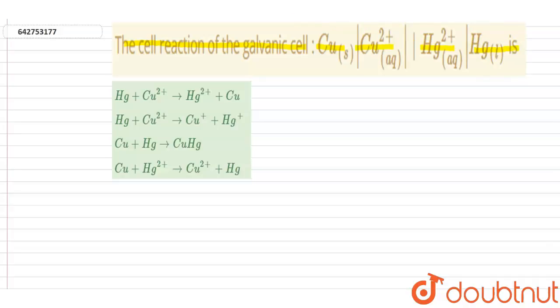So here our answer is solution. This equation: Cu solid and Cu plus 2 equals, therefore anode.